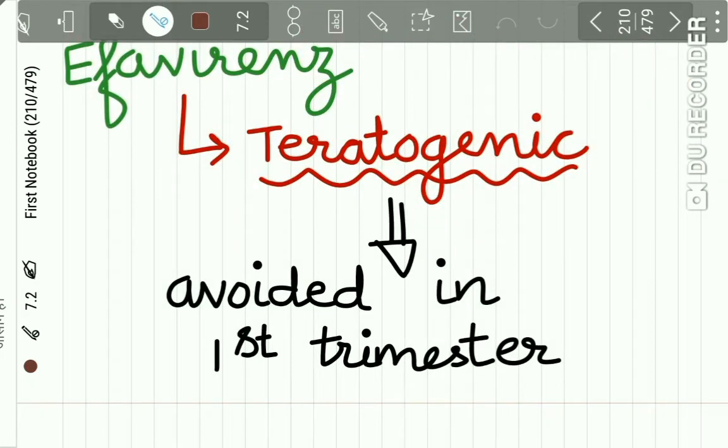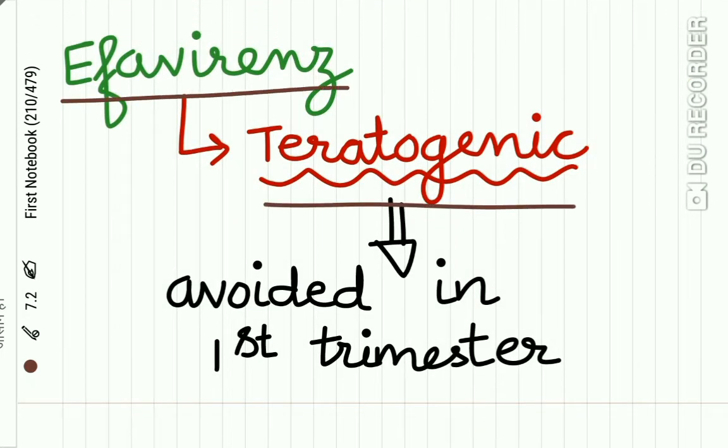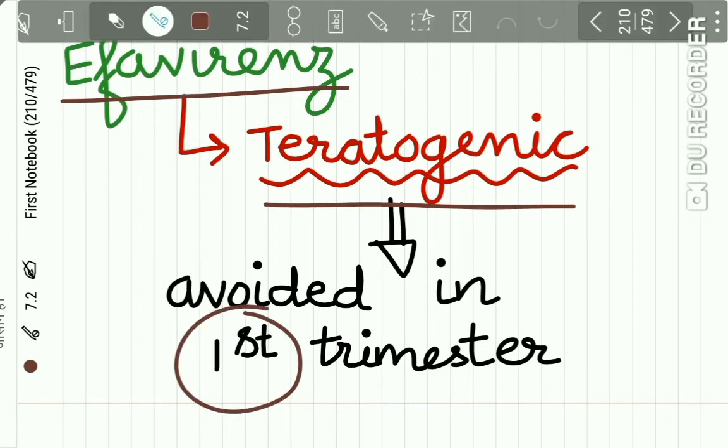The first-line regimen for pregnant women includes Zidovudine, Lamivudine, and Nevirapine. Efavirenz is teratogenic and so it is avoided in the first trimester of pregnancy.